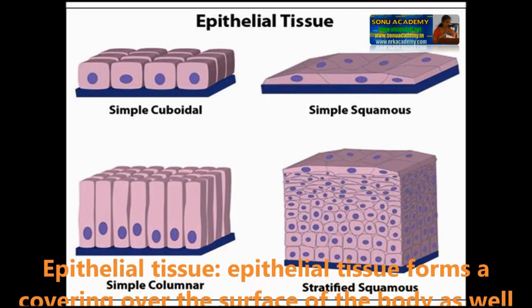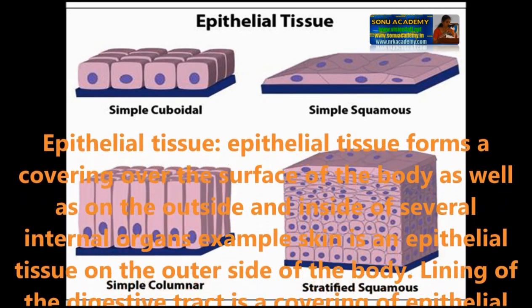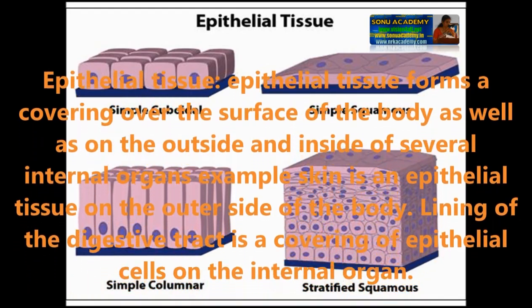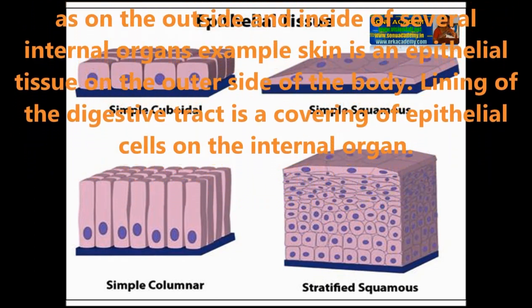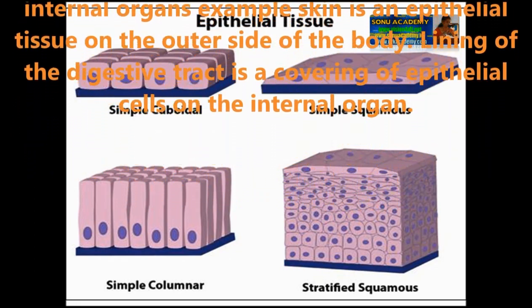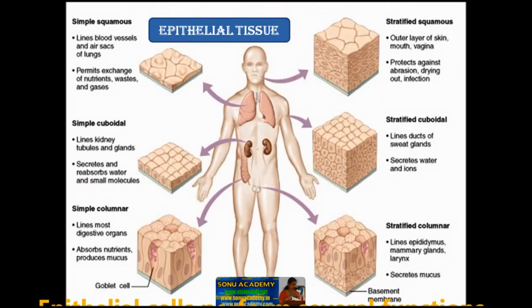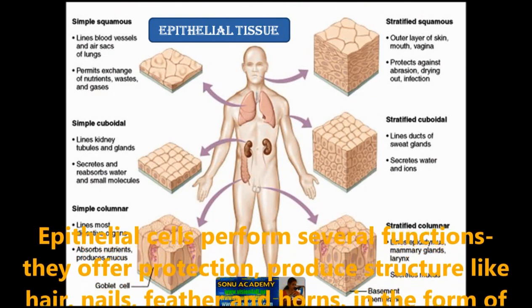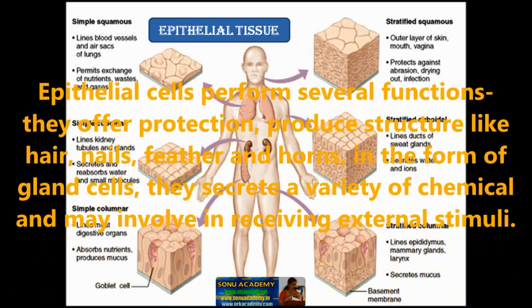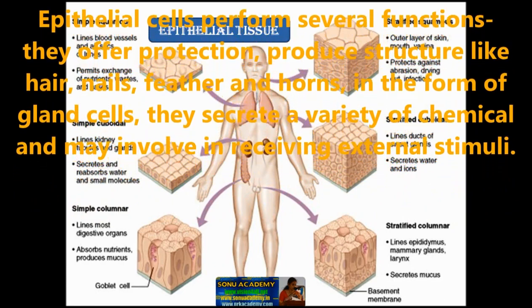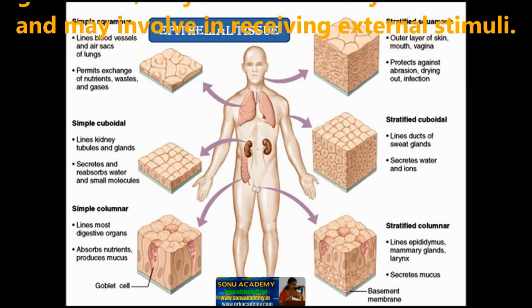Epithelial tissue forms a covering over the surface of the body as well as the outside and inside of several internal organs. For example, skin is an epithelial tissue on the outer side of the body, and the lining of the digestive tract is a covering of epithelial tissue on the internal organ. Epithelial tissue performs several functions: it offers protection, produces structures like hairs, nails, feathers and horns, and forms gland cells which secrete a variety of chemicals. It may also be involved in receiving external stimuli.